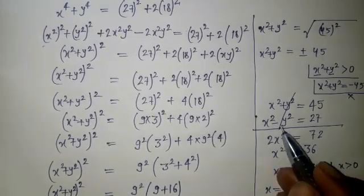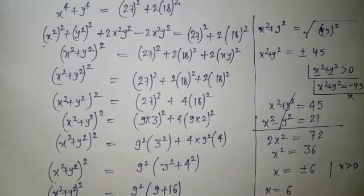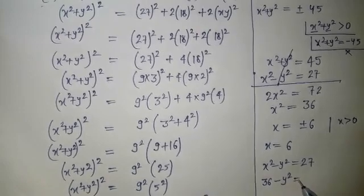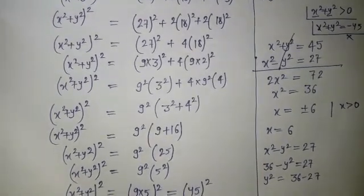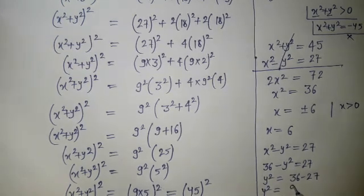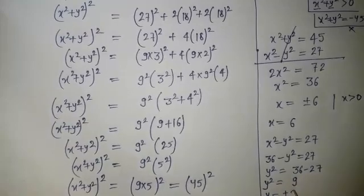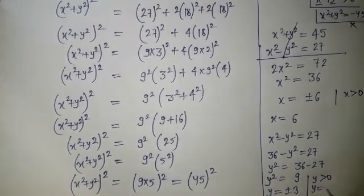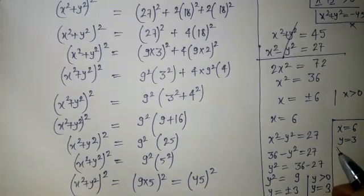Substituting x equals 6 into the first equation, x squared minus y squared equals 27, we get 36 minus y squared equals 27. So y squared equals 36 minus 27, which equals 9. Therefore y equals positive or negative 3. Since we need only the positive value, y equals 3.